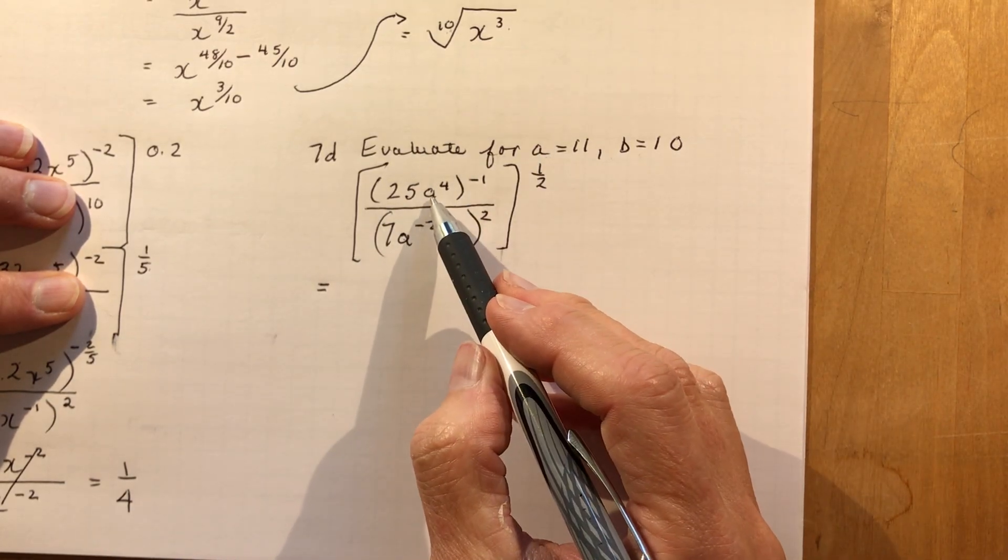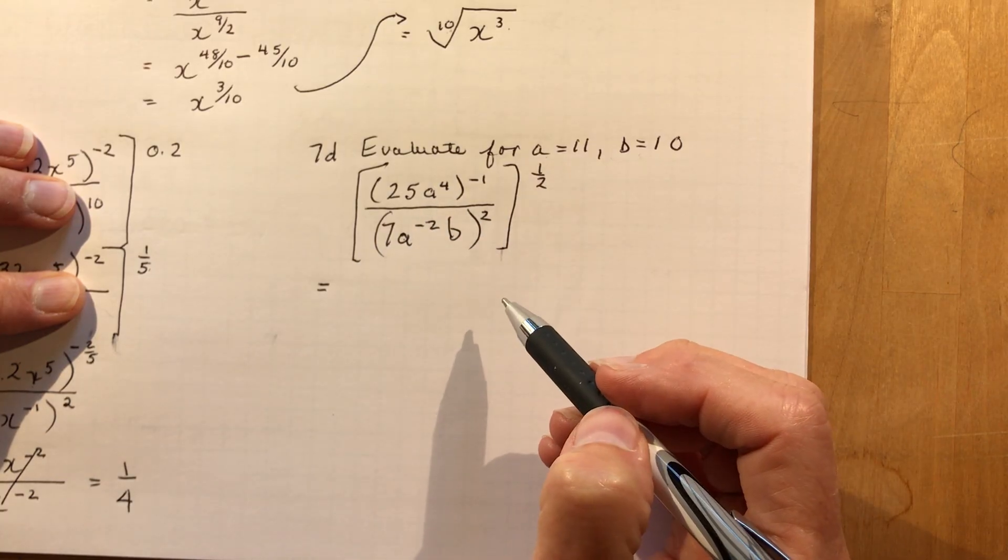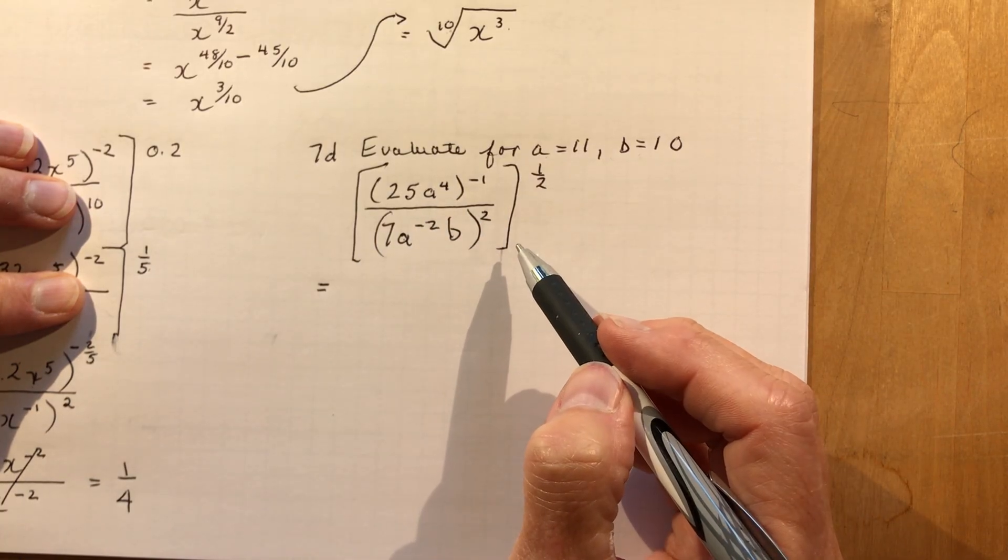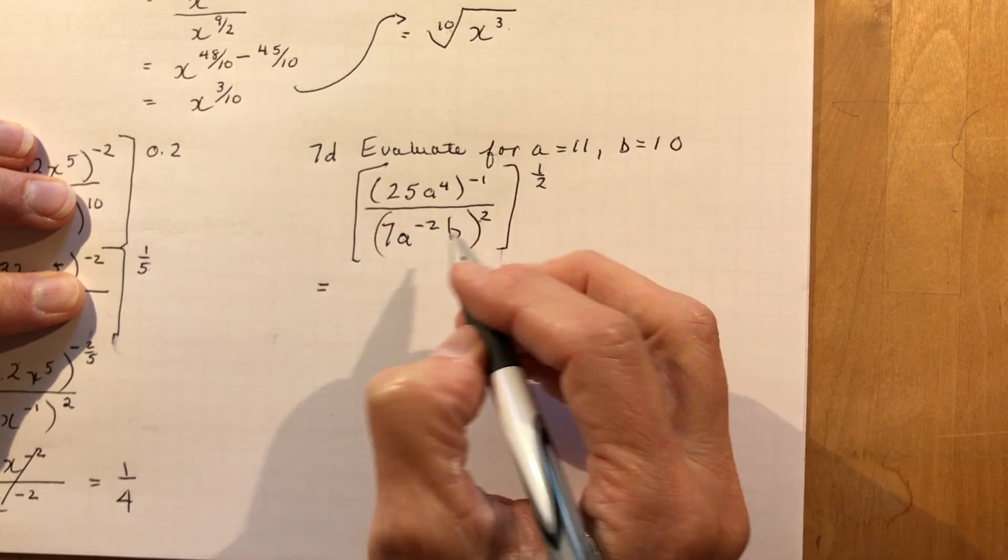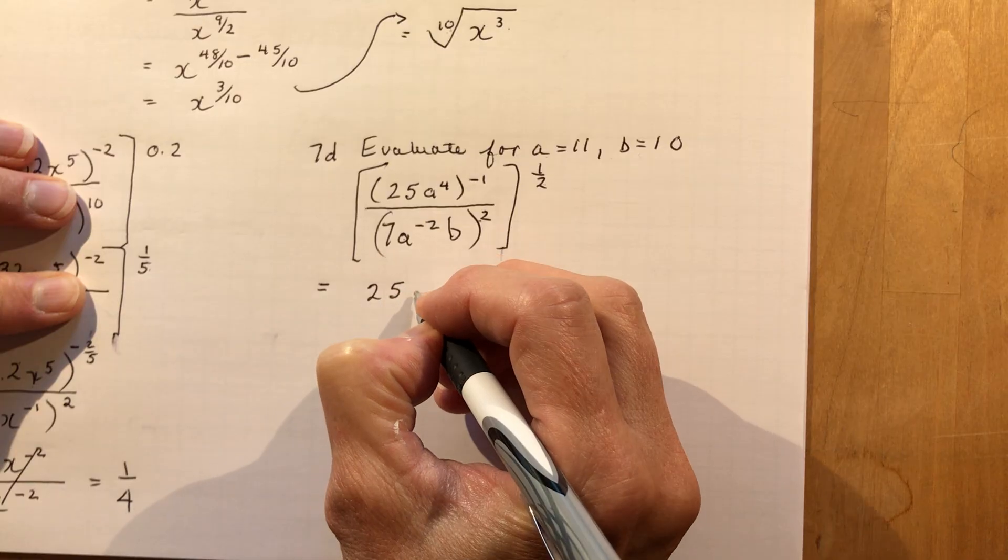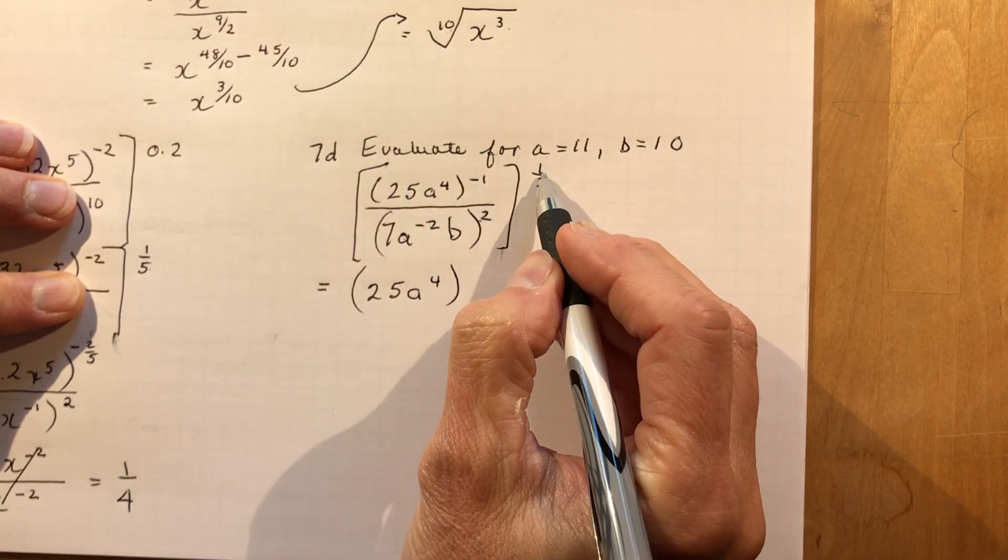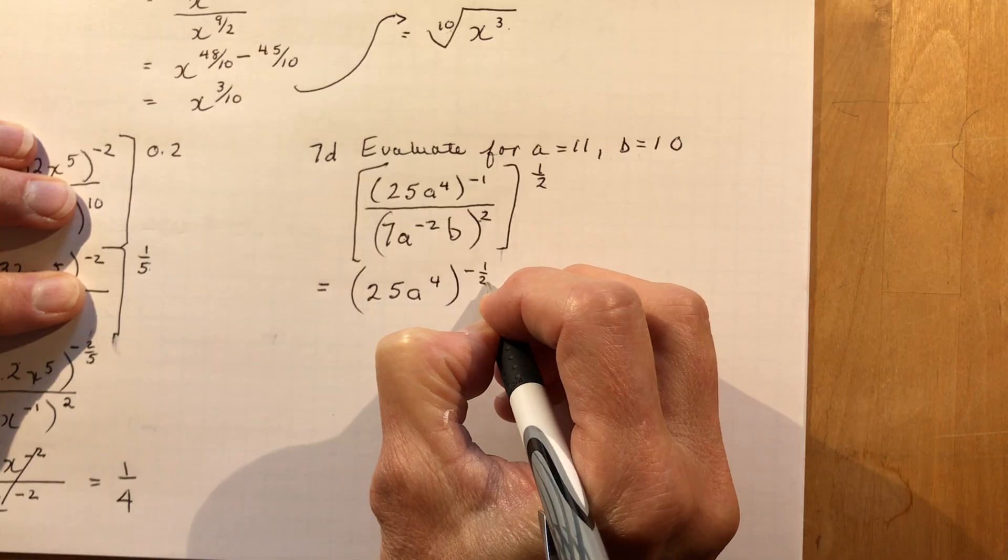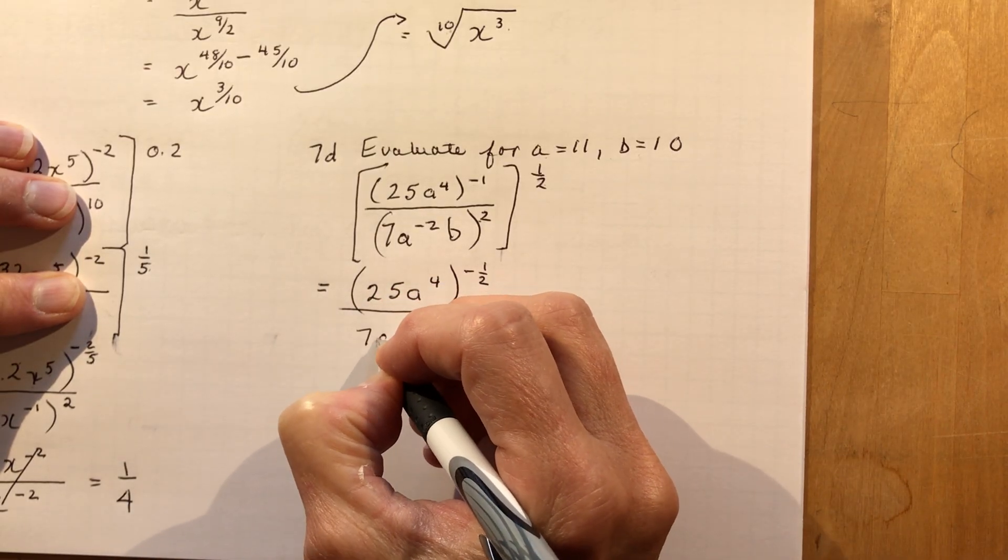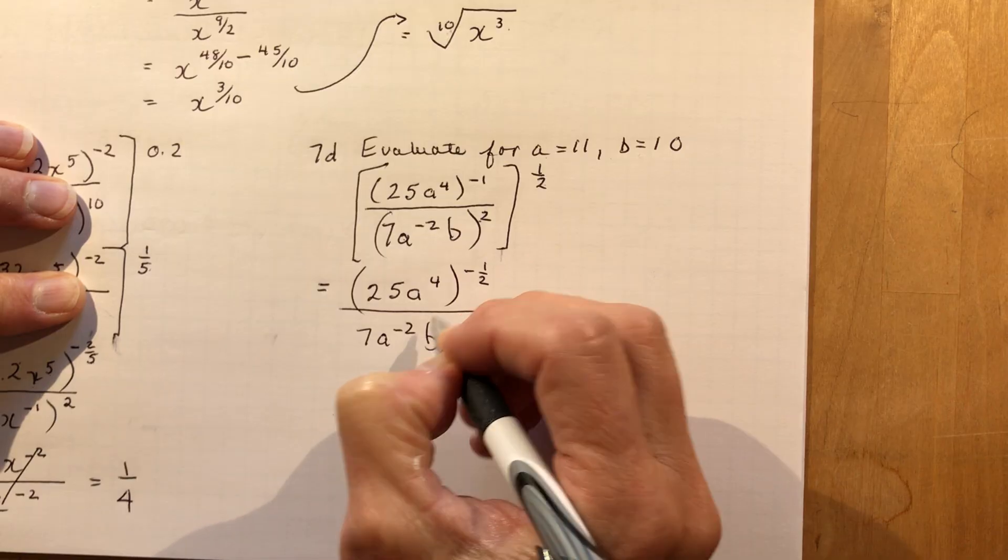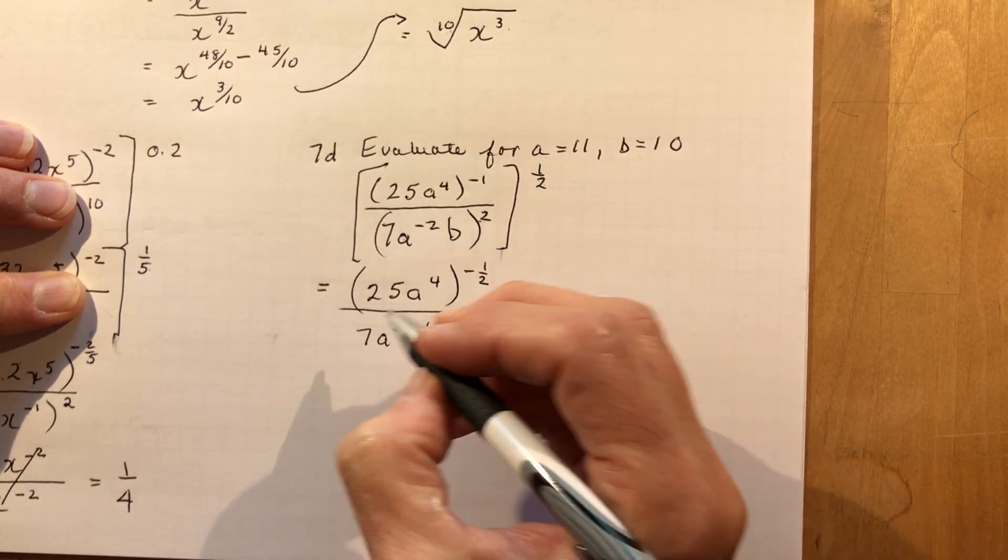Okay, evaluate for A is 11 and B is 10. Well if you put in A is 11 here, you'd have 11 to the fourth power. You don't want to do that on your calculator. You want to simplify it first, right? So let's bring this in, multiply this by each of these powers. So I have 25A to the fourth. Now minus 1 times 1/2 is minus 1/2. And in the denominator, I would have 7A to the minus 2B and 2 times 1/2 is 1, so to the 1 power.